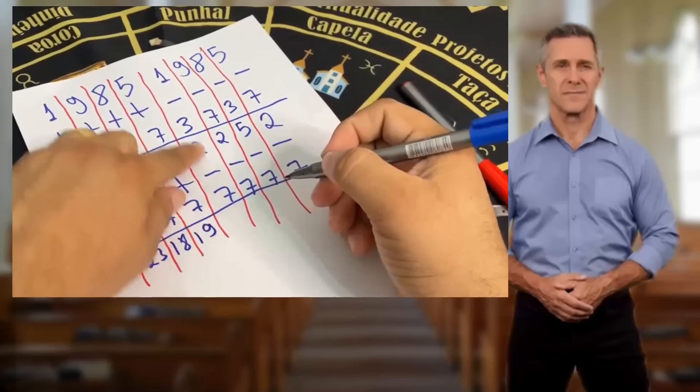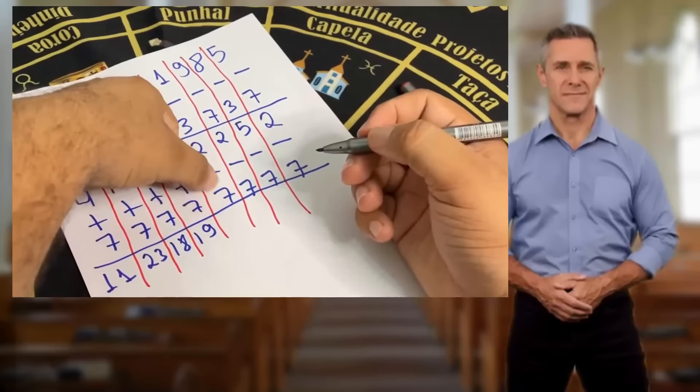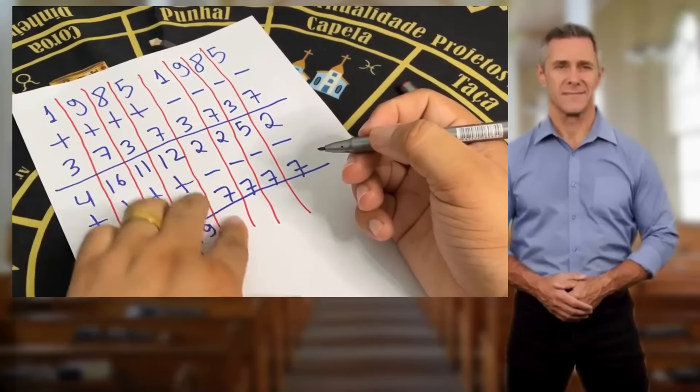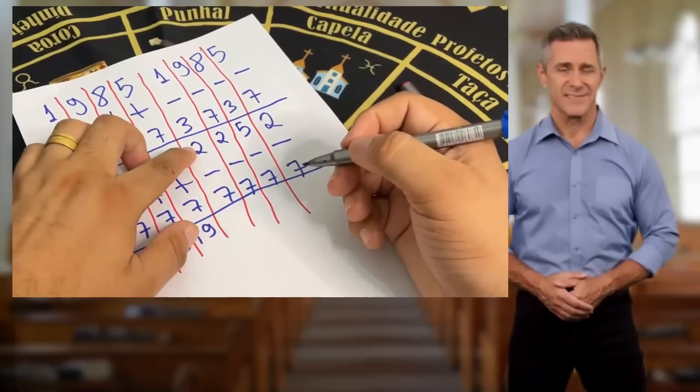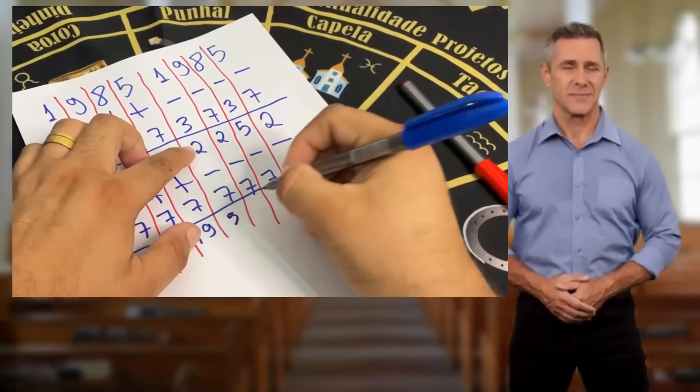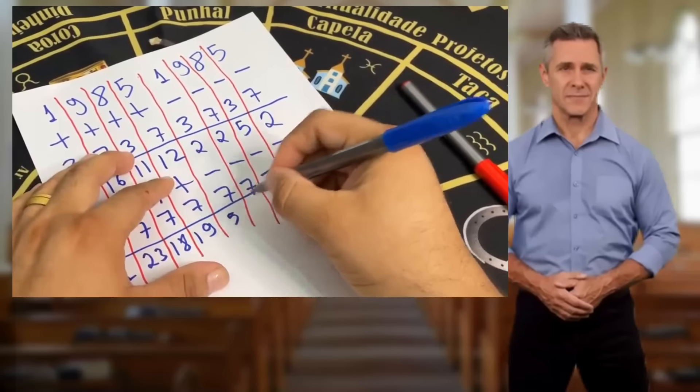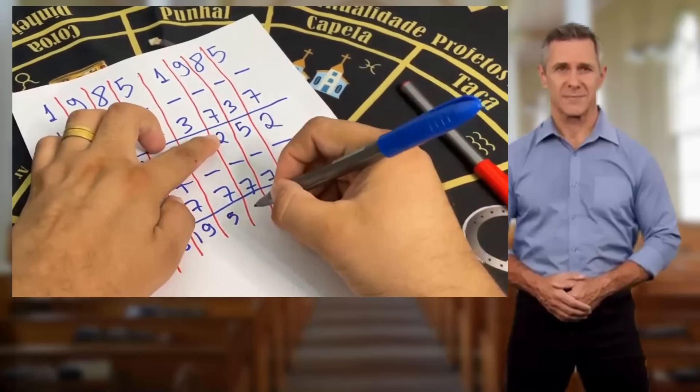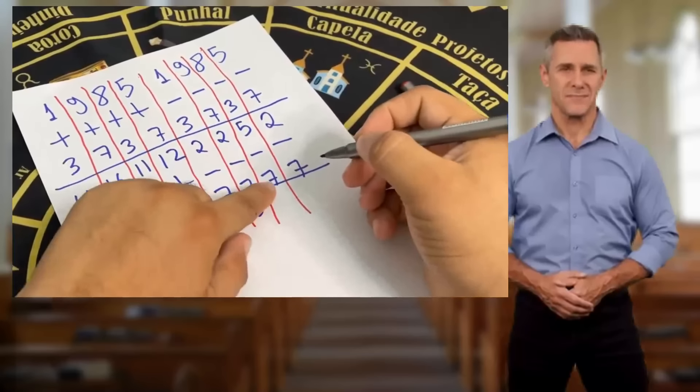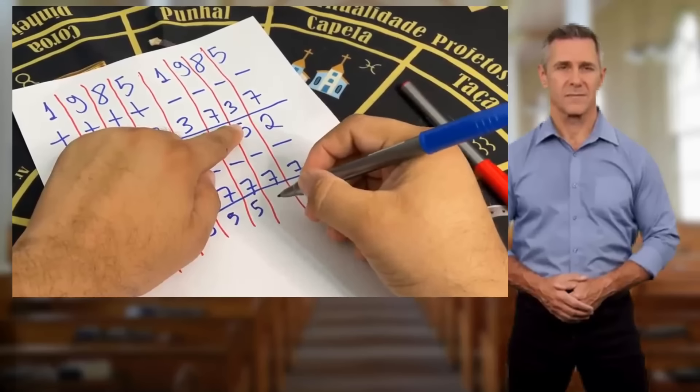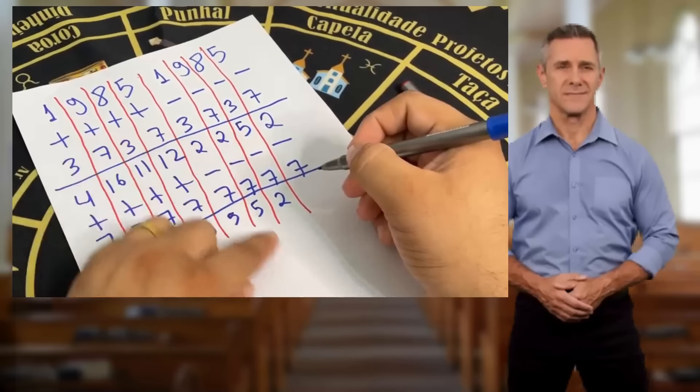Now, here in this part, we use the largest number first and then the smallest numbers. 7 minus 2 is 5. 7 minus 2 is 5 again. 7 minus 5 is 2. And 7 minus 2 is 5 again.